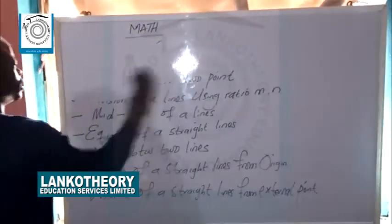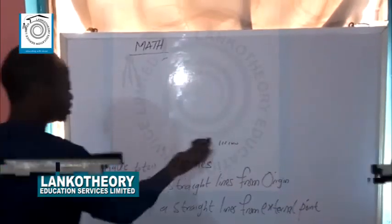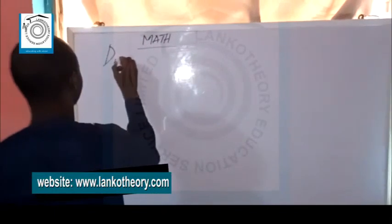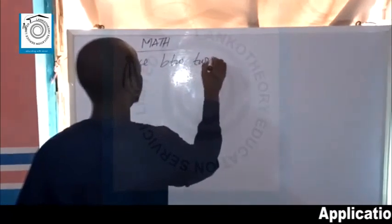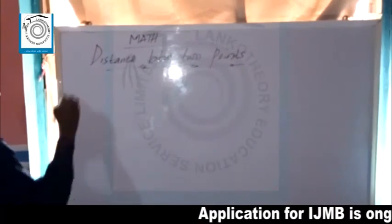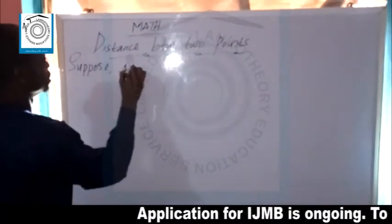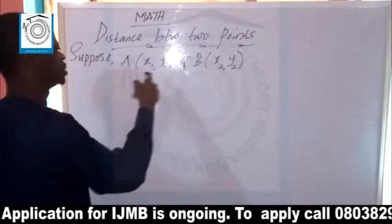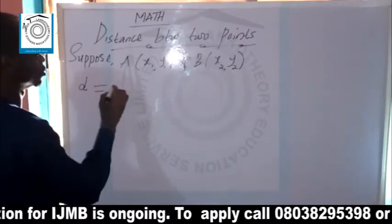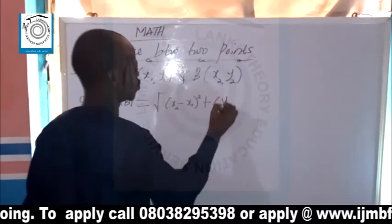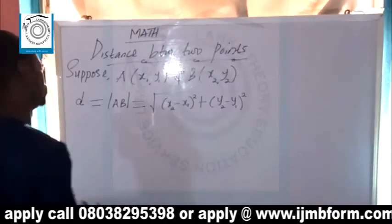Let's start with distance between two points. How do we determine the distance between two points? If you have two points represented in terms of coordinates — point A which contains coordinates (x1, y1) and point B which contains coordinates (x2, y2) — and we want to determine the distance between point A and point B, the formula is: D = √[(x2 − x1)² + (y2 − y1)²]. This is the formula for calculating distance.